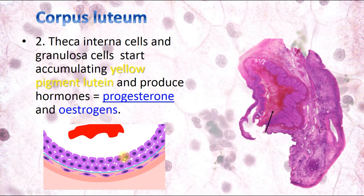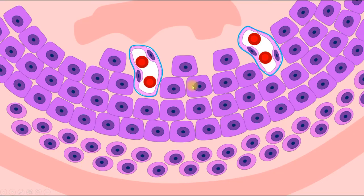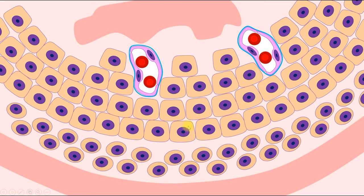In the second stage of corpus luteum development — glandular metamorphosis — teca interna cells and granulosa cells accumulate yellow pigment called lutein and begin producing progesterone and some estrogens. These cells are now called luteocytes. Granulosa luteocytes are larger and lighter, while teca luteocytes are smaller, darker, and more peripherally located. The name corpus luteum comes from 'luteus,' meaning yellow, reflecting the accumulated lutein pigment.